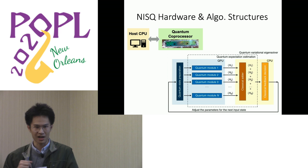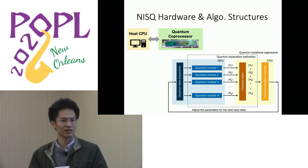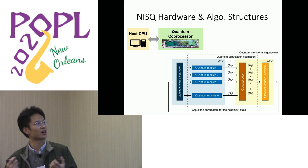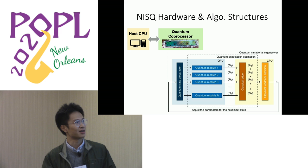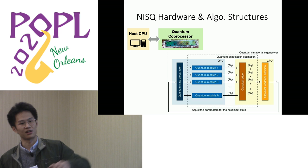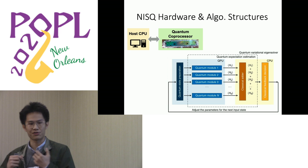The third requirement is explicit classical and quantum separation. NISQ devices usually consist of two parts: the host CPU, which is the classical part, and the quantum coprocessor, which serves as the accelerator. Quantum algorithms usually have the same structure — for example, in a variational quantum eigensolver (VQE), the quantum and classical parts are explicitly separated and interact through procedures.